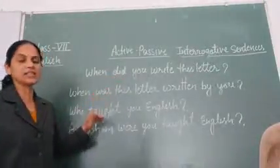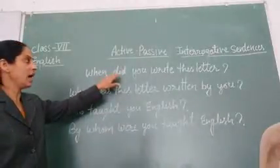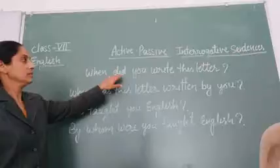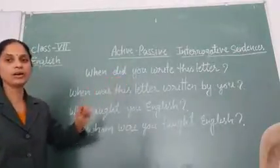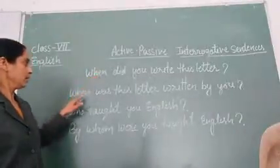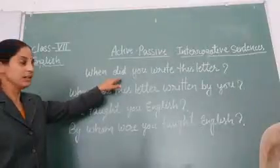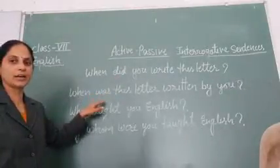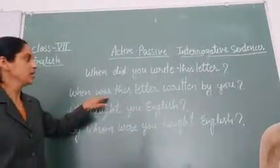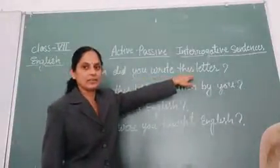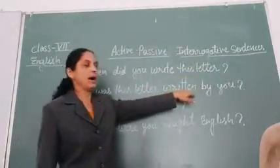When we change the sentence into passive voice, then in place of 'did' we have to use the helping verb related to that tense — that is 'was' or 'were'. The main verb changes to its third form. So here it becomes: this letter written by you.